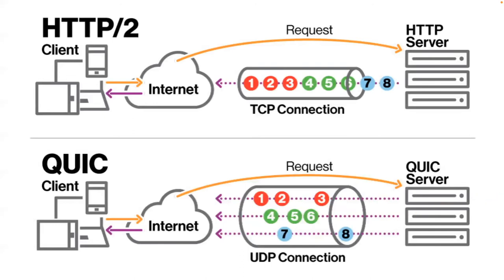With HTTP 2, we can multiplex, but it's over one connection — if anything happens to that connection, it gets clogged or blocked until we can retransmit and clear the blockage. But with QUIC, we have multiple streams operating independently inside a broader connection. Even if something happens to one of the streams, we're still free to transmit on the others — we can cancel that stream and open a new one to replace it. Congestion control and flow control are also at the stream level, so each stream independently manages that.